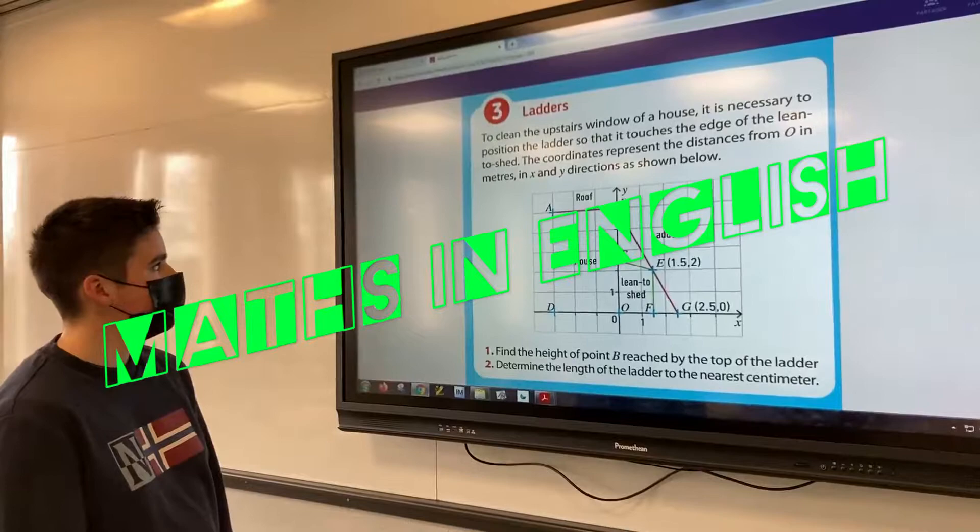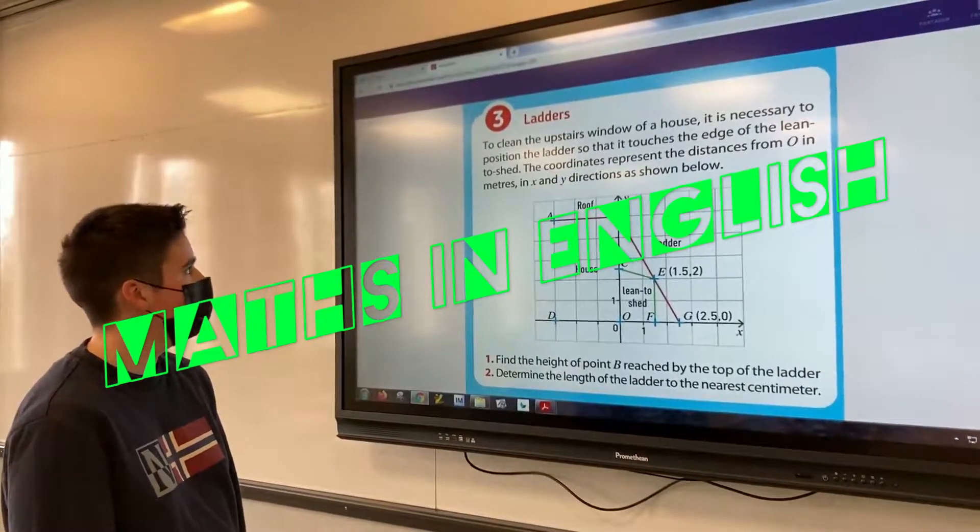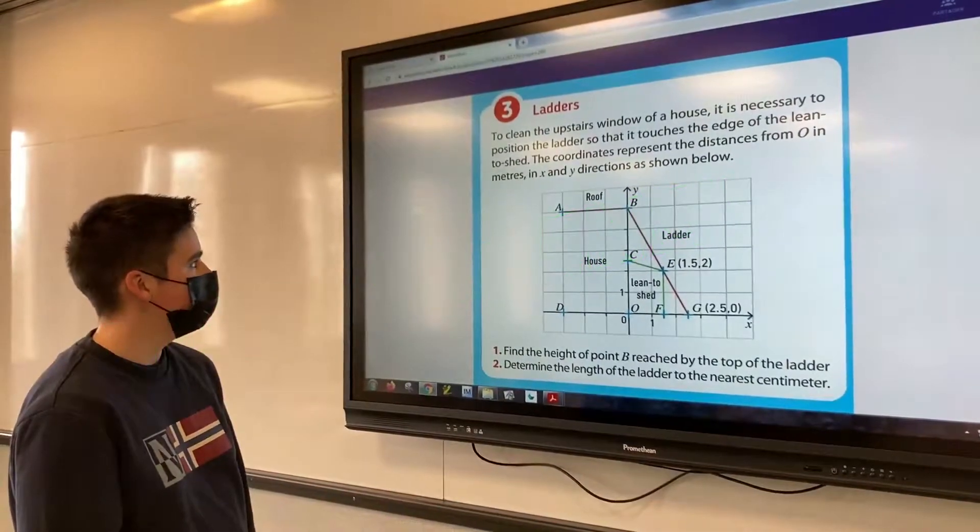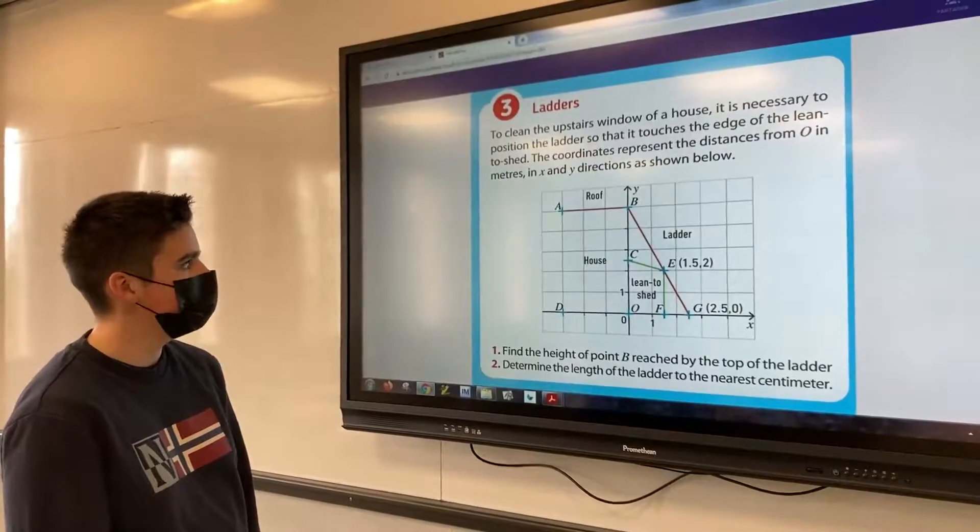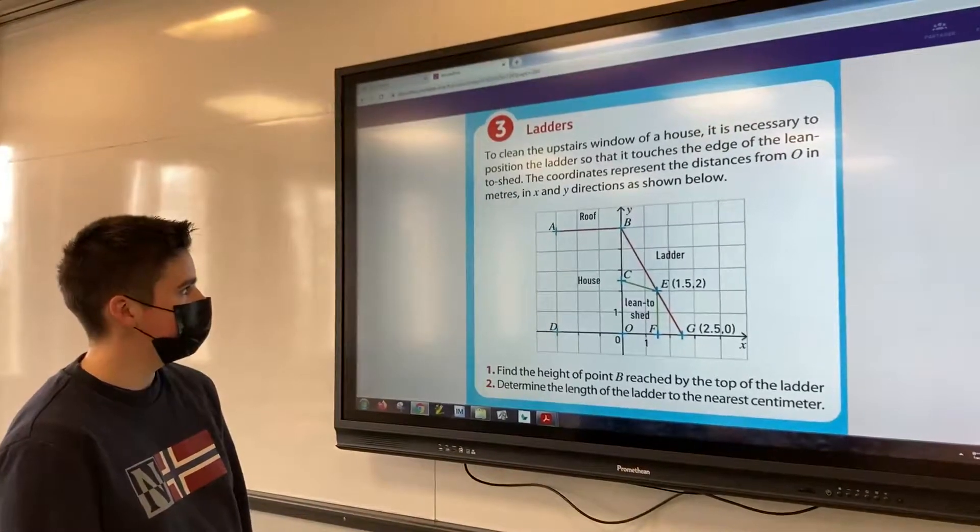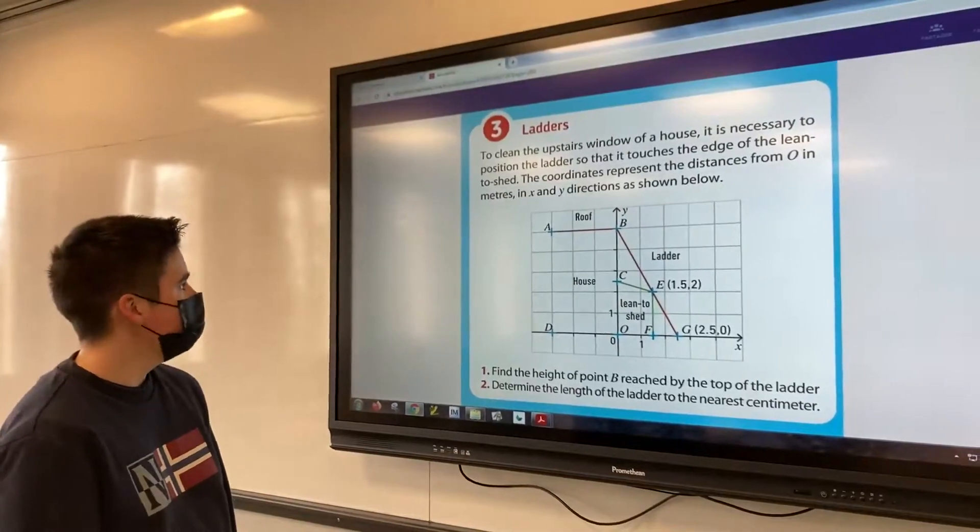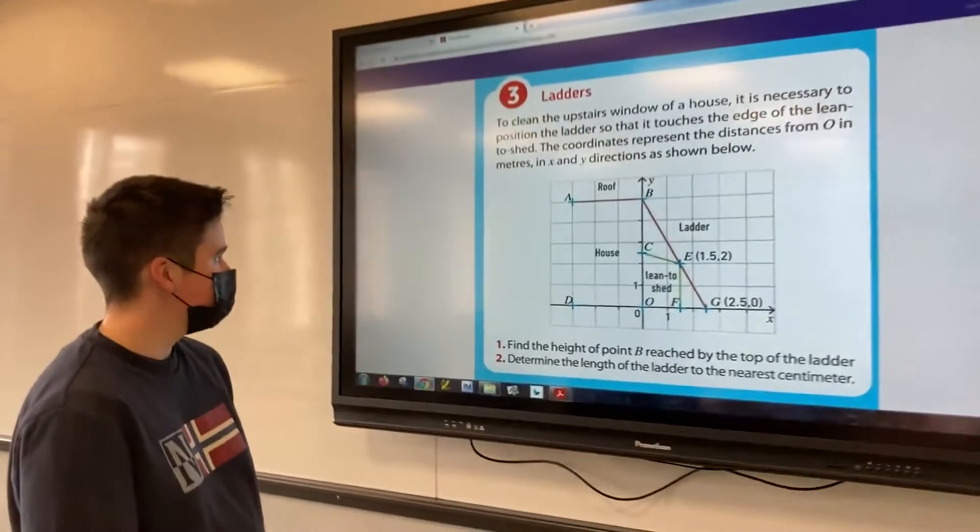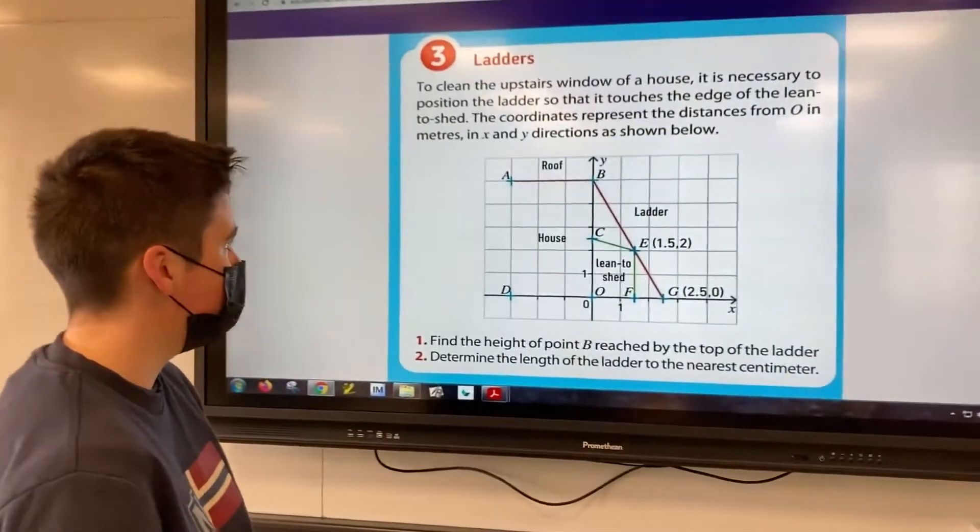To clean the upstairs window of the house, it is necessary to position the ladder so that it touches the edge of the lean-to-sheet. The coordinates represent the distance from O in meters in X and Y direction as shown below.